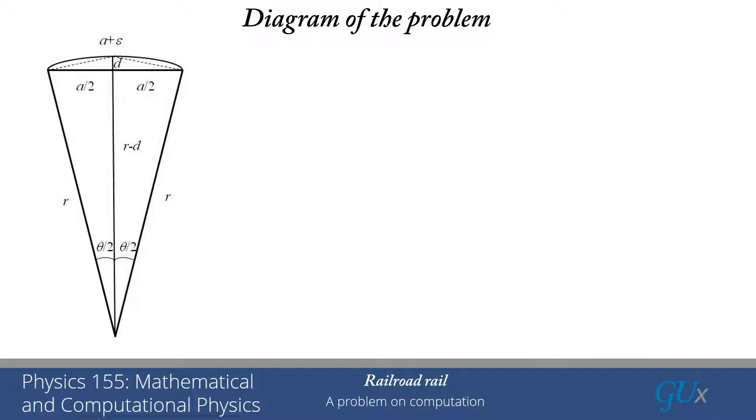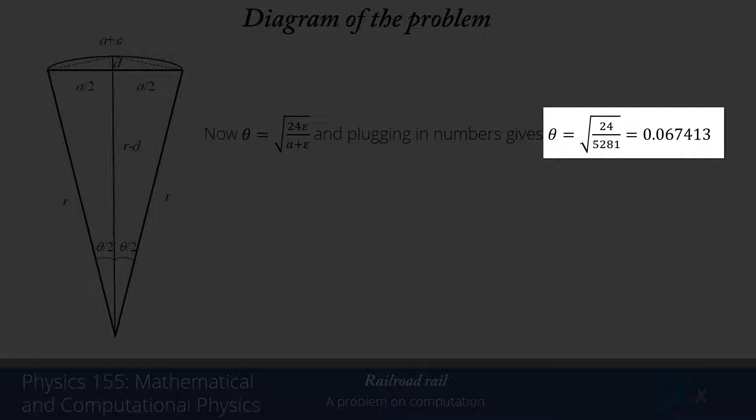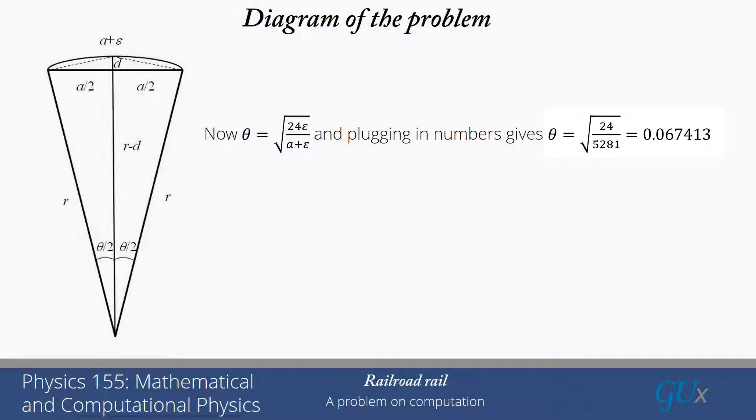We've determined theta. All I have to do now is plug in those numbers. Theta turns out to be the square root of 24 over 5,281. If I take the square root of that, I get 0.067413.